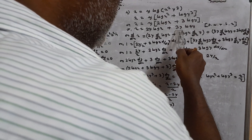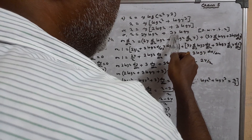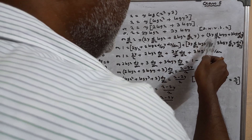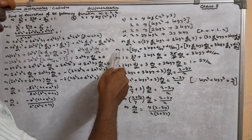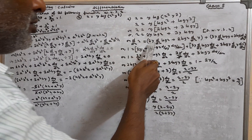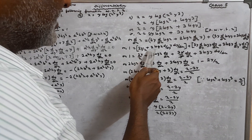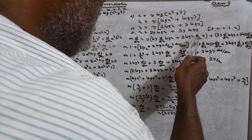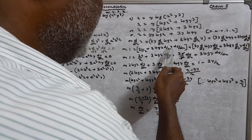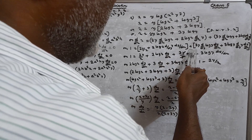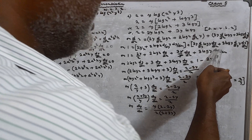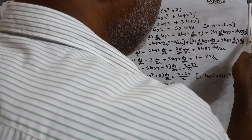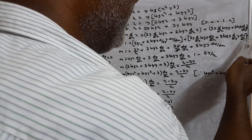Similarly for 3Y log Y: 3Y · d/dx(log Y) + 3 log Y · d/dx(Y). Since Y cannot be differentiated directly with respect to X, we write dY/dx for each Y term. And d/dx(log Y) requires the chain rule: (d/dy of log Y) · dY/dX = (1/Y) · dY/dX.